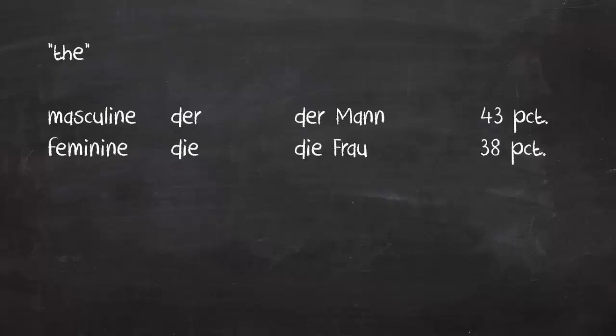The feminine definite article is 'die,' as in 'die Frau,' meaning 'the woman.' Of all the nouns in German, 38% are feminine.